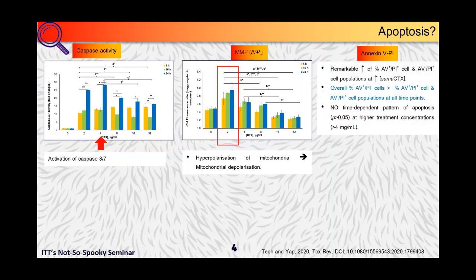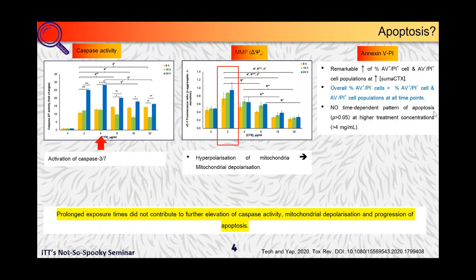As revealed by the Annexin-5-PI assay, the overall A5-positive cells actually exceeded the A5-positive PI-positive cell population and PI-positive cell population at all time points. It's interesting to note that at higher toxin concentration and prolonged exposure times of the SUMA CTX in MCF-7 did not further elevate the caspase activity, progression of mitochondrial depolarization, and apoptosis.